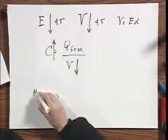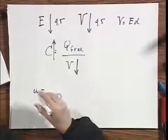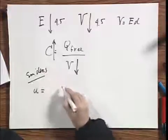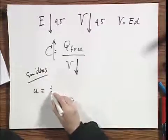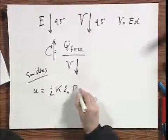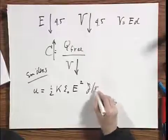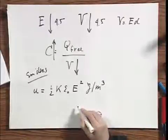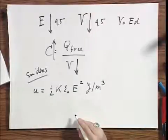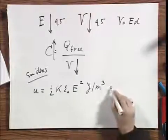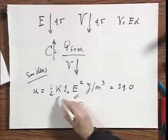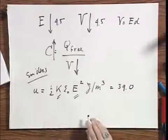The little u, which is energy density, how many joules per cubic meter, equals one half times the dielectric constant times epsilon zero times E squared. This would be in joules per cubic meter. It's easy to calculate how much this is. I found it to be 39.0, because I think you know E, you know k, so that is rather easy.